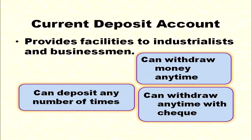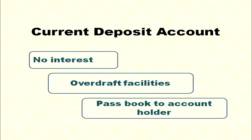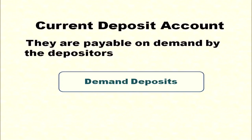The current deposit account provides facilities to industrialists and businessmen. In a current deposit account, you can deposit any number of times and withdraw at any time — in money as well as cheque. No interest is paid on current deposit accounts, but overdraft facilities are allowed, and a passbook is given to the account holder.